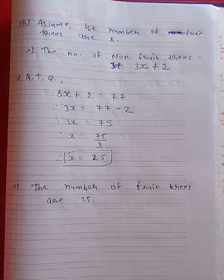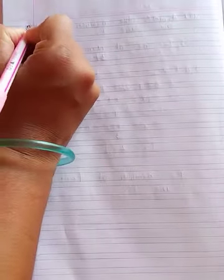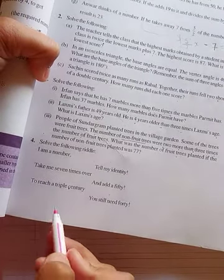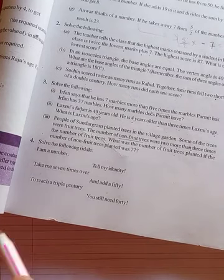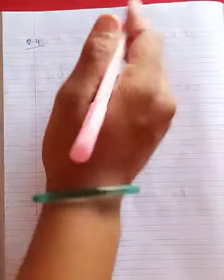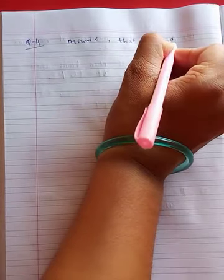Now next, question number 4: solve the following riddle. Here you have a riddle given like a poem, and we have to solve it. We read the statements one by one and form an equation. First statement: 'I am a number — tell my identity.' So first of all we assume that number is x. वो number x है — हमने assume कर लिया, identity दे दी. Second statement: 'Take me seven times over.' Means seven multiply by x, so 7x.